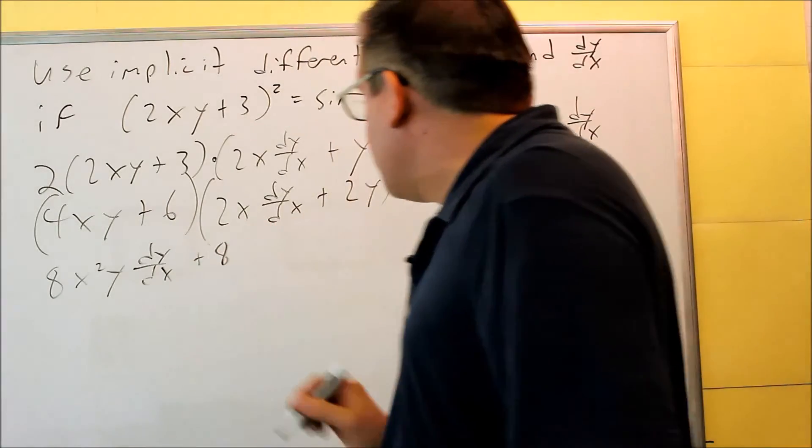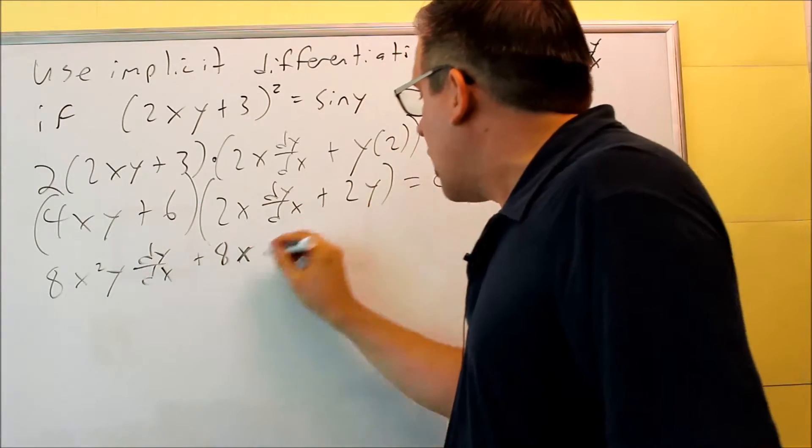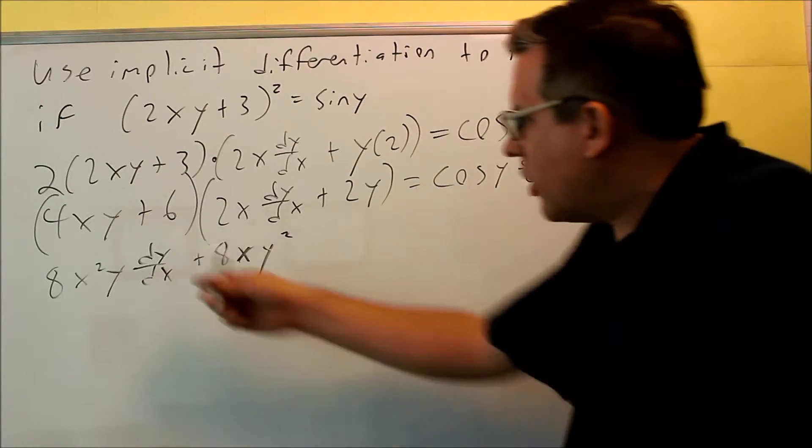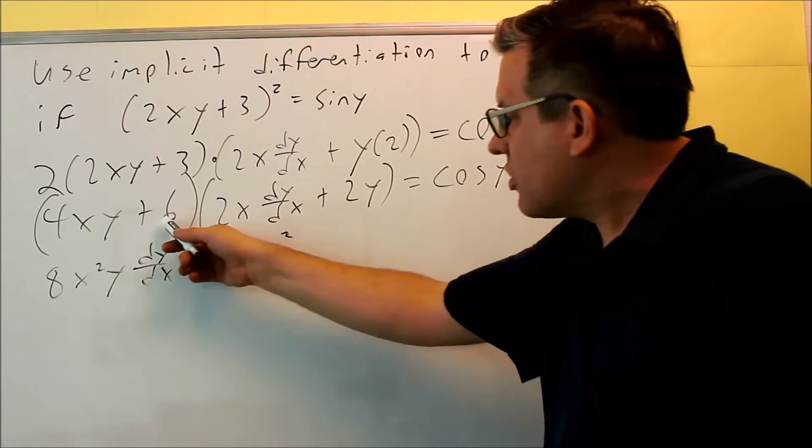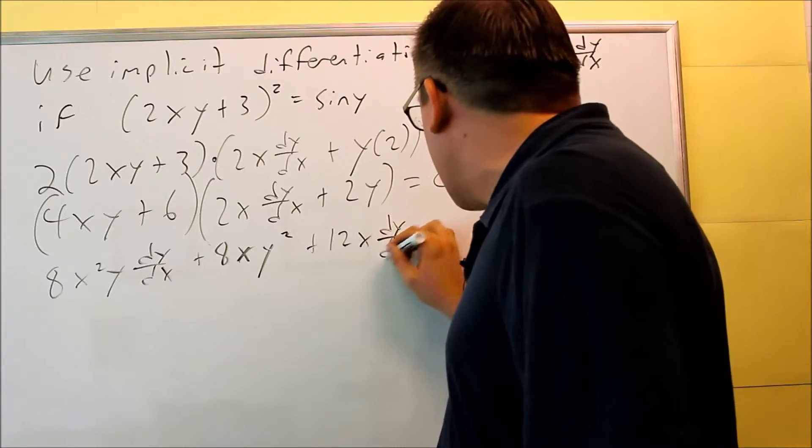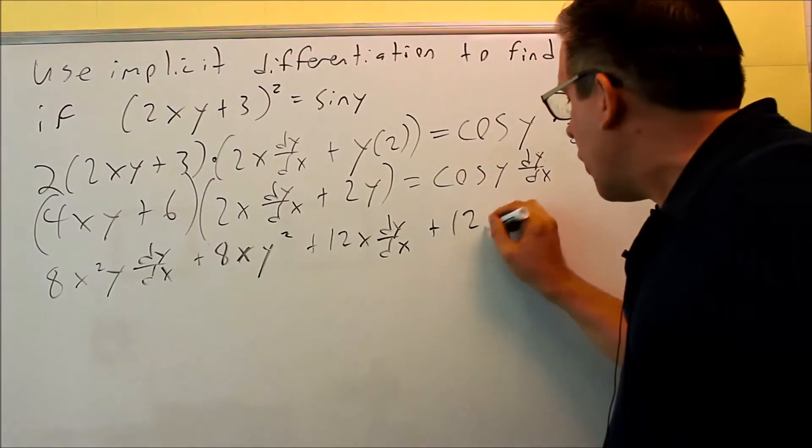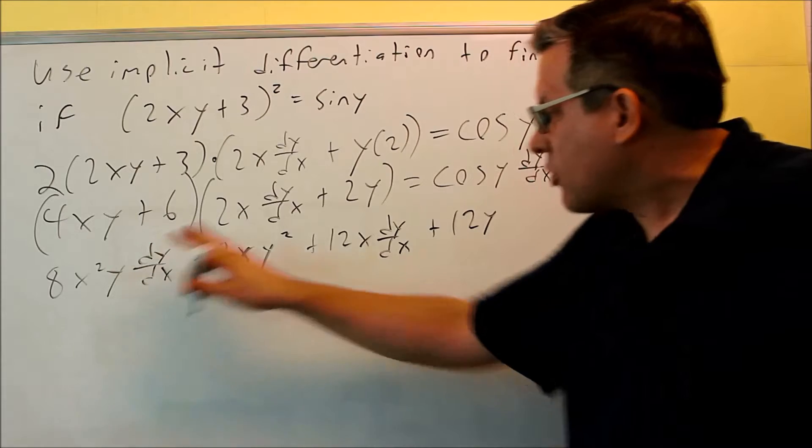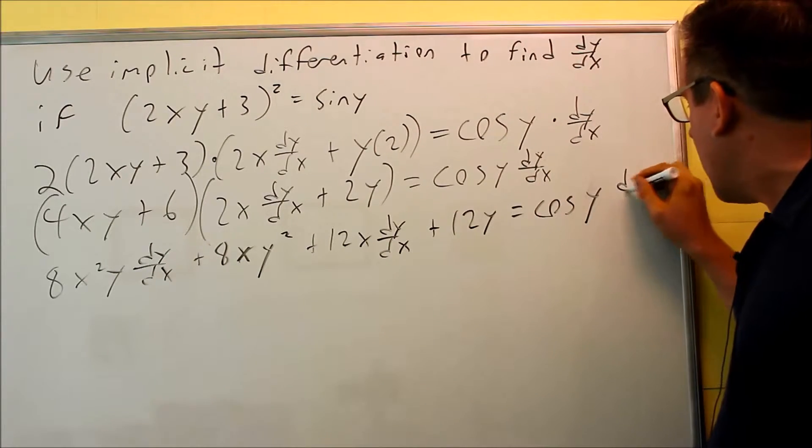That's it. I can't do any more with that one. So I've done first term times this, first term times this. Now I'm going to do 6 times this, that's going to be plus 12x dy/dx. And then I have 6 times 2y is 12y. Nothing more I can do with that. So I've multiplied it, foiled it all out. I still have this other term over here, cosine y dy/dx.